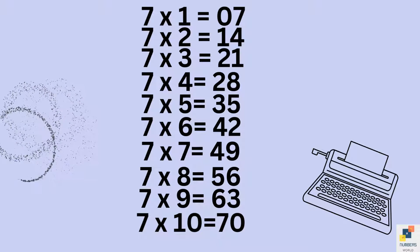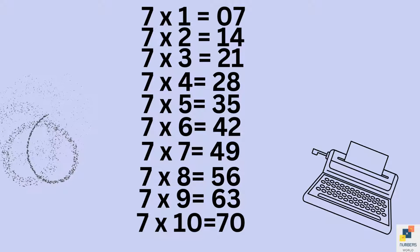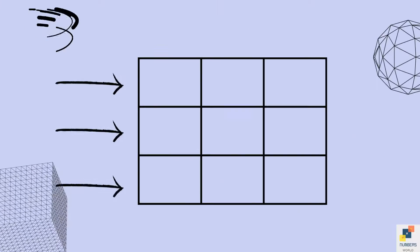So now let's learn the short trick to write the table of 7. For that purpose, first of all we need to draw a 3 by 3 grid. 3 by 3 grid means it has 3 rows and 3 columns.